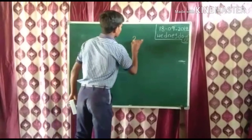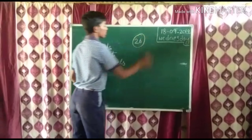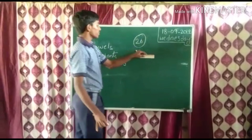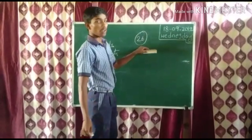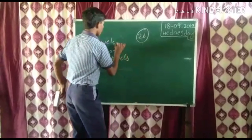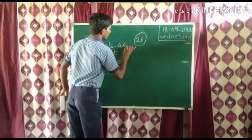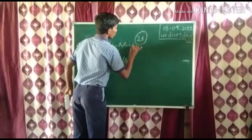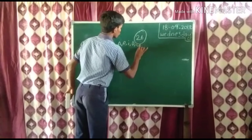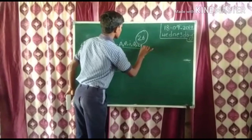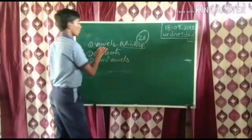In these 26 alphabets, A, E, I, O, U — these 5 are vowels.